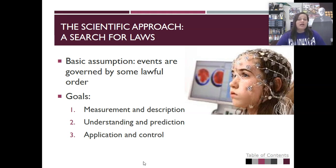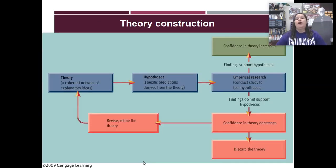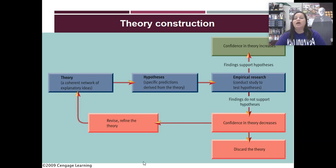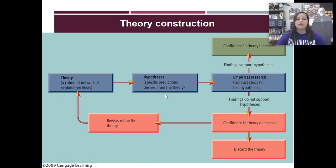For example, if we're trying to determine what causes anxiety: how do we measure anxiety? How would we describe anxiety? Understand and predict when anxiety happens? And then ultimately, can we learn to control anxiety? When forming theories, we start with an actual idea, form a hypothesis, and conduct empirical research. When that research is good, it builds confidence in our theories. If it doesn't, the confidence decreases — we either discard the theory or revise it, and start all over again.